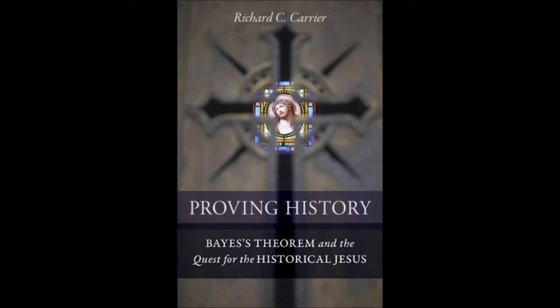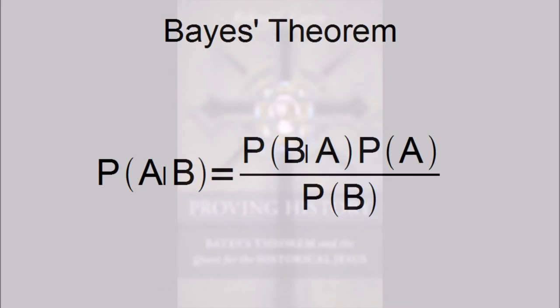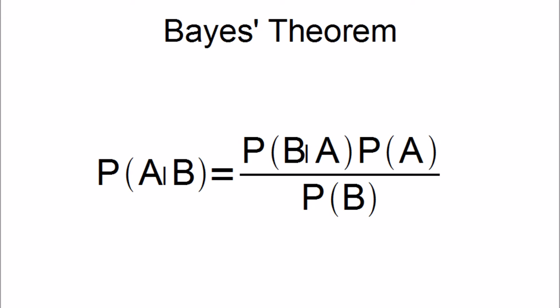It is stated as this formula. In words, it means the probability of A given B is equal to the probability of B given A, times the probability of A without reference to B, all divided by the probability of B without reference to A.